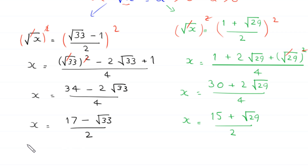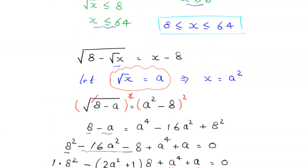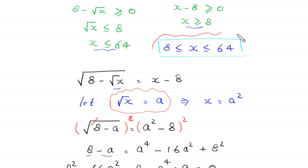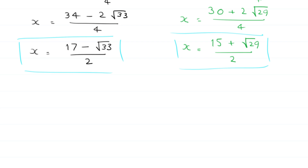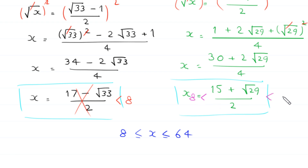So we get two values of x: (17 minus root 33) over 2 and (15 plus root 29) over 2. Now we use the domain to remove any invalid solution. The domain requires 8 ≤ x ≤ 64. Checking: (17 minus root 33) over 2 is less than 8, so it is rejected. But (15 plus root 29) over 2 is greater than 8 and less than 64, so this is the valid solution.